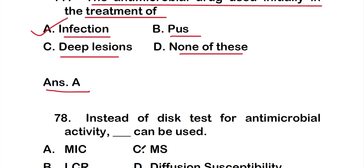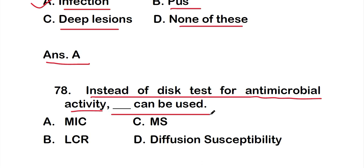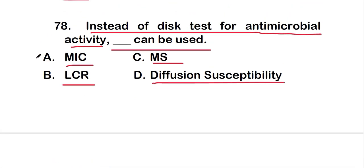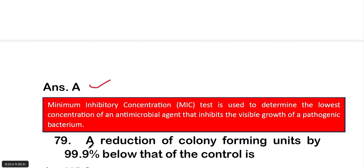Question 78: Instead of the disc test for antimicrobial activity, dash can be used — options: A: MIC, B: LCR, C: mass spectrometry, D: diffusion susceptibility. The right answer is option A, MIC — minimal inhibitory concentration. MIC is used instead of the disc test for antimicrobial activity. The MIC test determines the lowest concentration of an antimicrobial agent that inhibits the visible growth of a pathogenic bacterium.